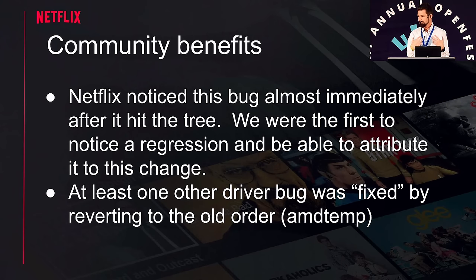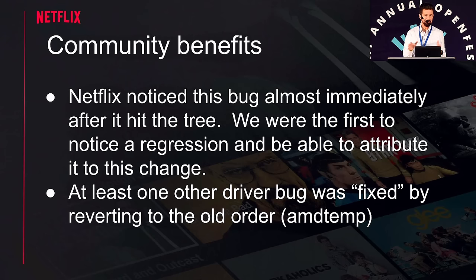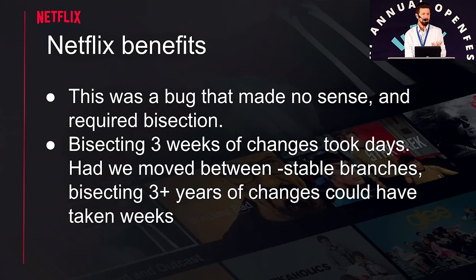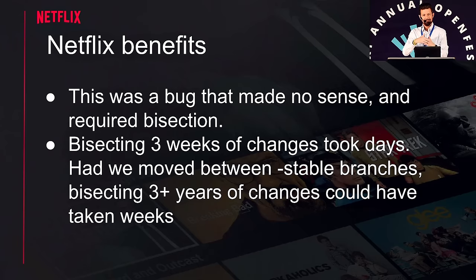The benefit to the community is that we noticed this bug almost immediately because we run a lot of server-class hardware. Other people might see a problem like this and just say the new version of FreeBSD is slower without knowing why. We were the first to notice the regression and attribute it to this specific change. We later realized there was one other bug around the same time — a kernel crash in an AMD temperature driver due to the same issue. The benefit to us at Netflix: this was a crazy bug that required bisection. Bisecting three weeks of changes was terrible because each step takes four hours — but that's still tractable. Bisecting three years' worth of changes would have driven me insane, since twice as many changes means only one more bisection step logarithmically.